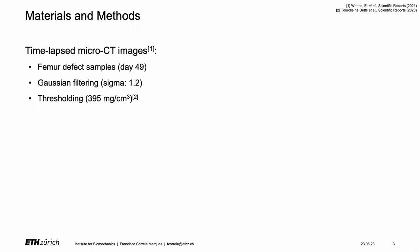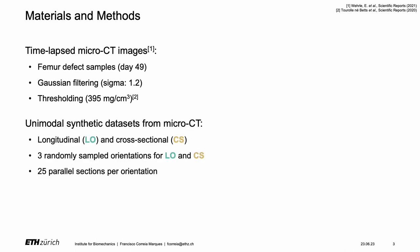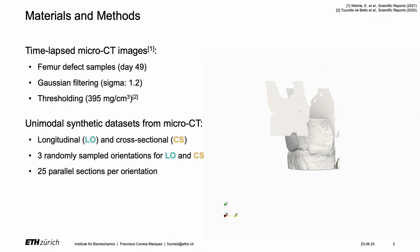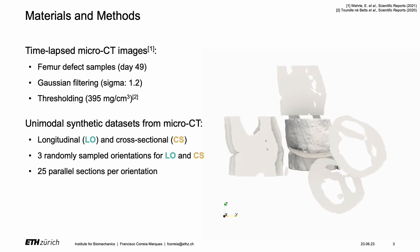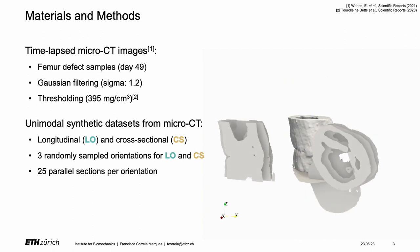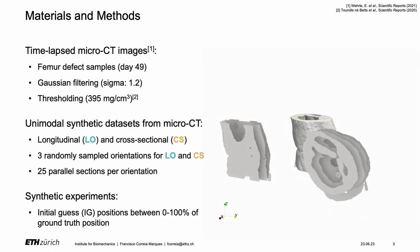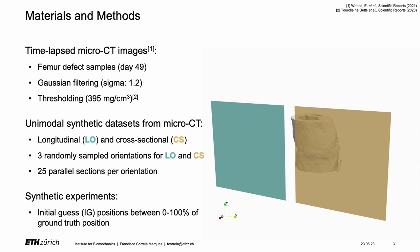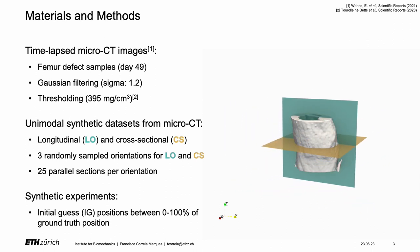We recreated formalin-fixed paraffin-embedded longitudinal and cross-sectional sections. We sampled 3 ground truth orientations per condition and created 2D datasets containing 25 parallel sections. These sections are then registered iteratively, considering initial guesses defined between 0 and 100% of their ground truth rotation and translation.